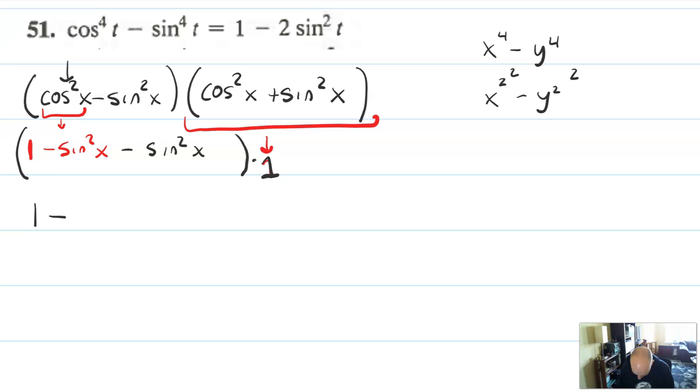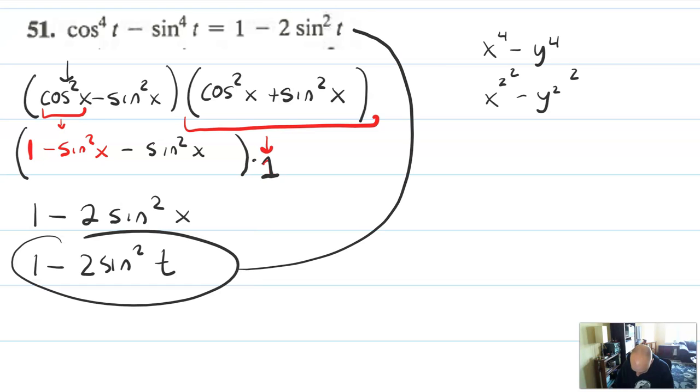Well, that's the same as one minus two sine squared, which I guess I'm going to switch the variables. There wasn't any logic there. I just forgot to write the correct variable. And that's equal to what we were going for. So this problem is also solved.